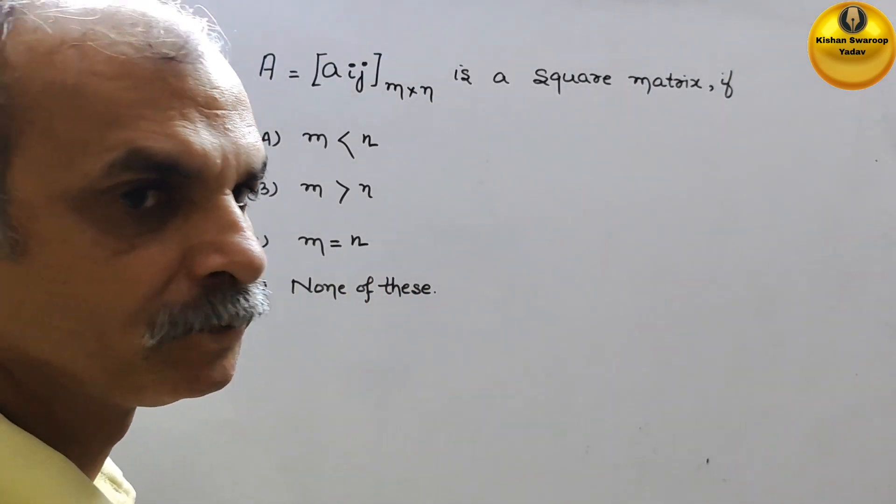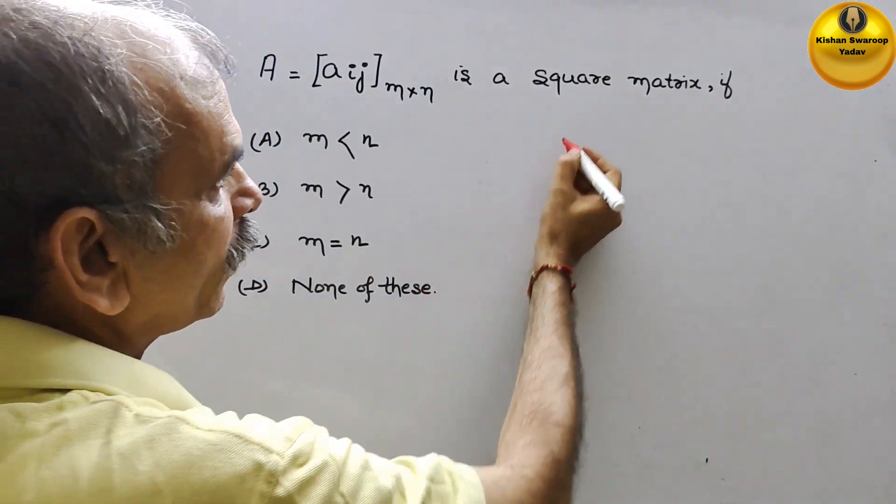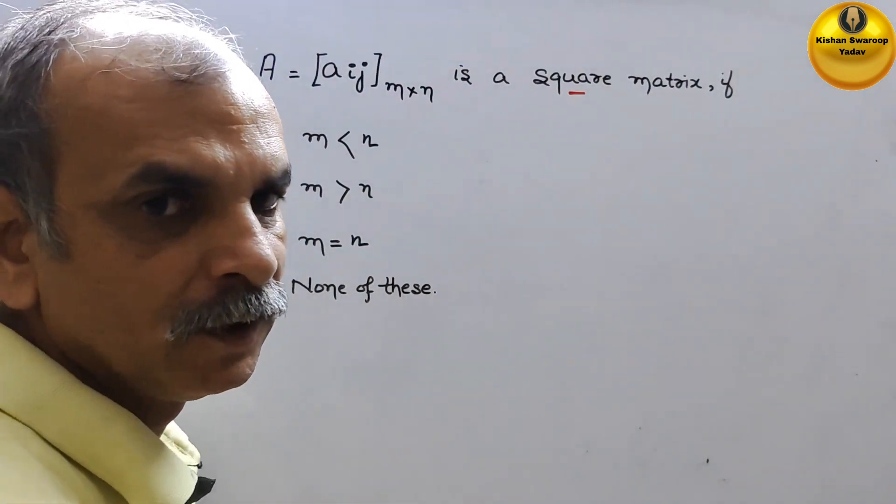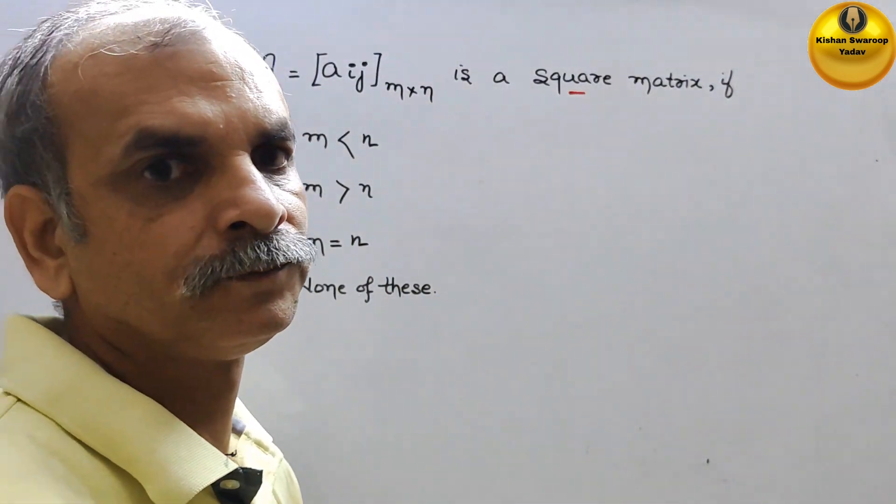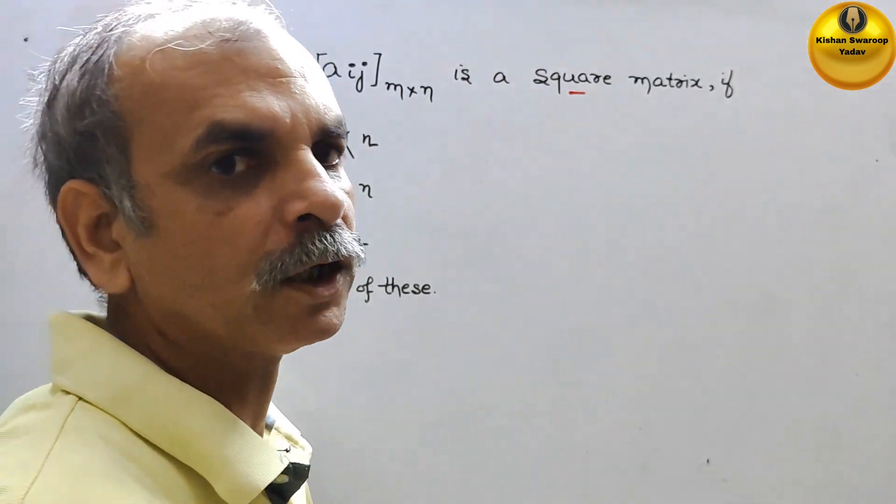Now understand this. So they have given you square. Square means what? It will be what?